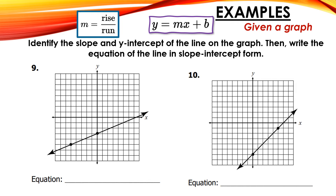Starting at the point closest to my left, I'm going to count up: 1, 2 — my rise is 2. Then I count over: 1, 2, 3, 4, 5 — so my slope is 2 fifths. B is where my graph crosses the y-axis, and that is at negative 3, so my b is negative 3. Plugging it in to slope-intercept form: y equals 2 fifths x minus 3.